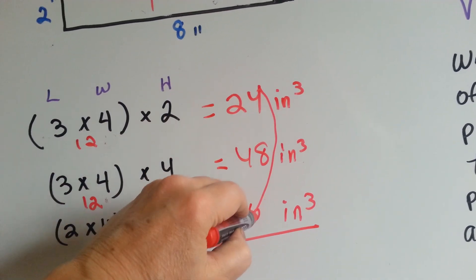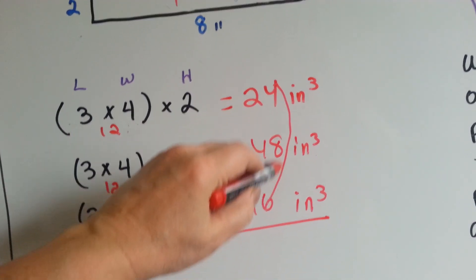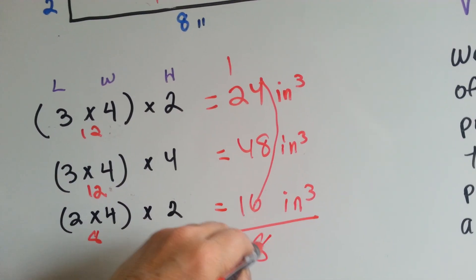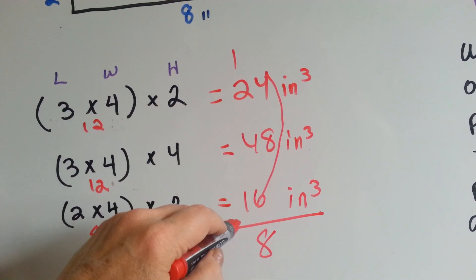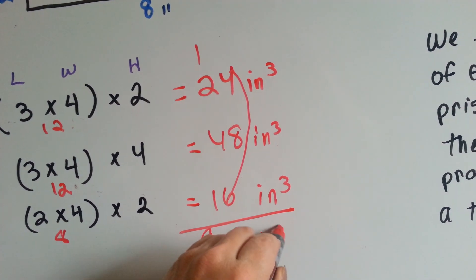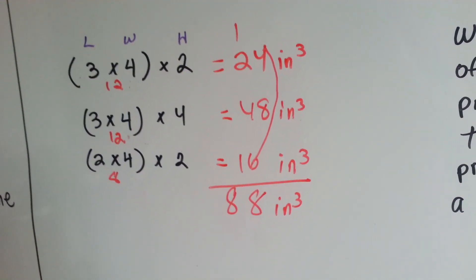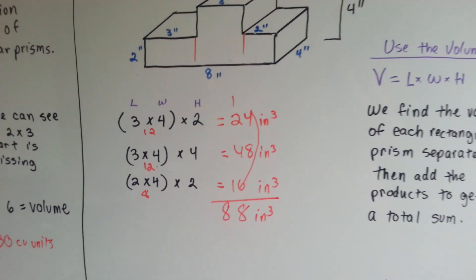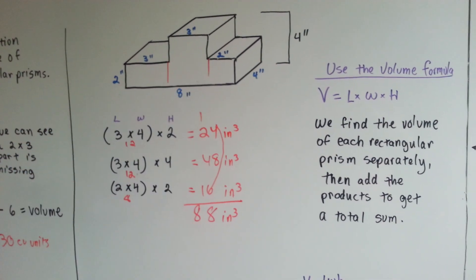We add the friendly ones first. 6 and 4 is 10, plus 8 is 18. And then 3 and 4 and 1 is 8. We have 88 inches cubed. See? So we multiplied, found each one separately, and then added all the products together.